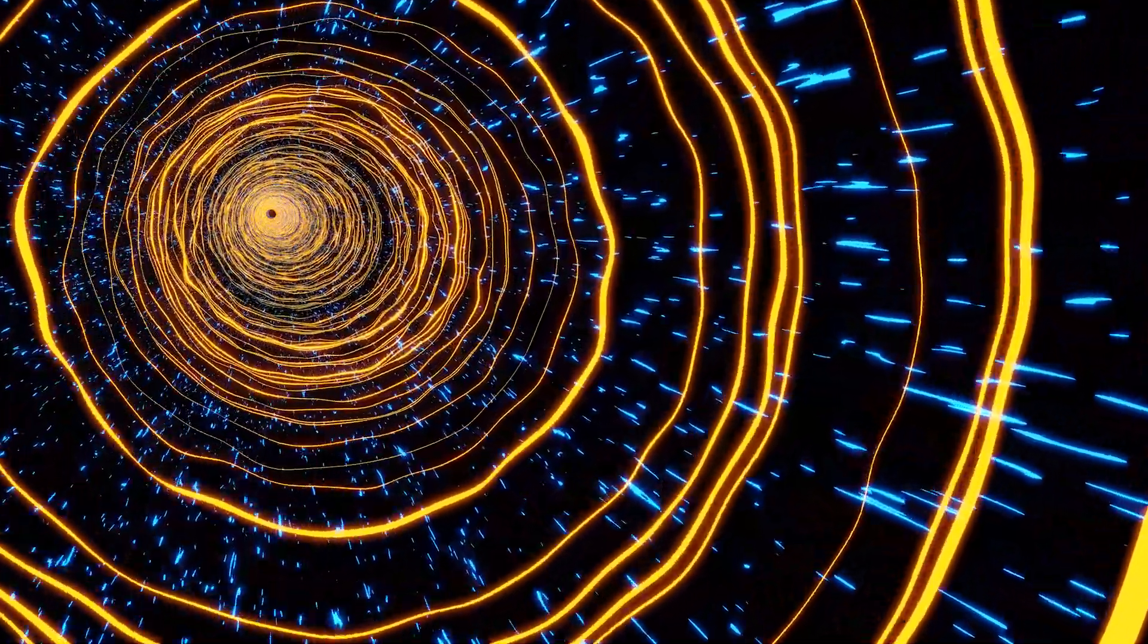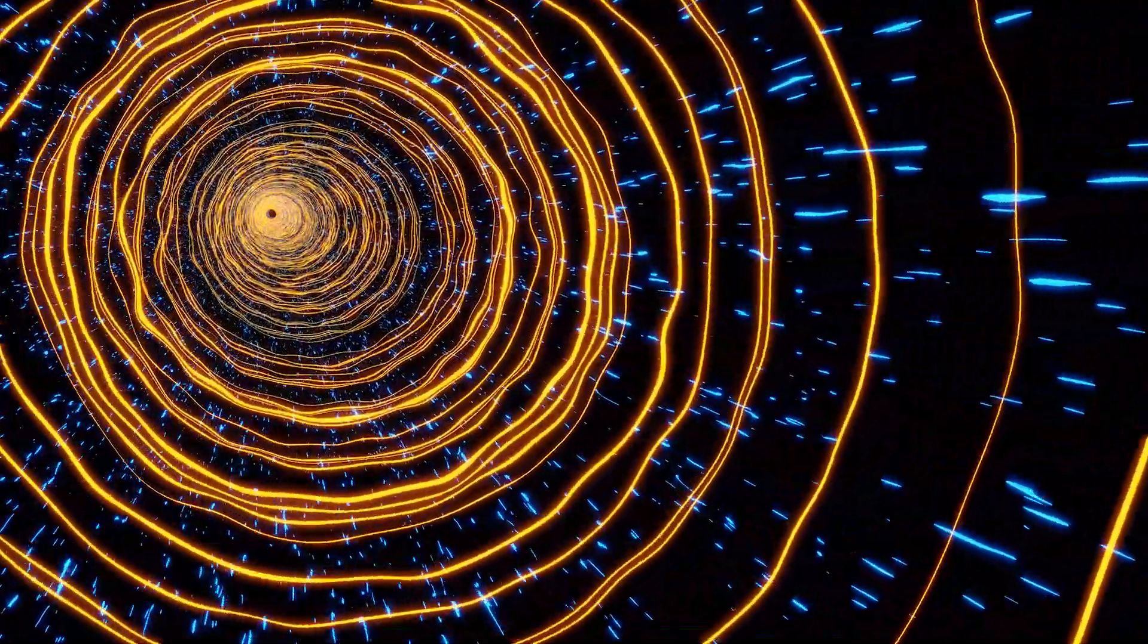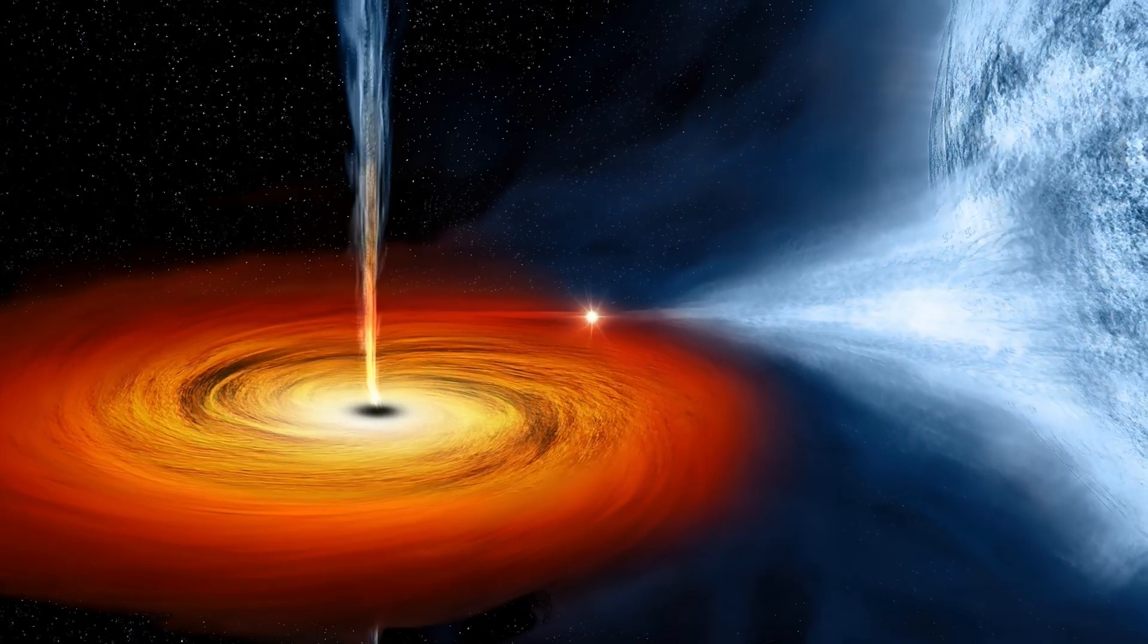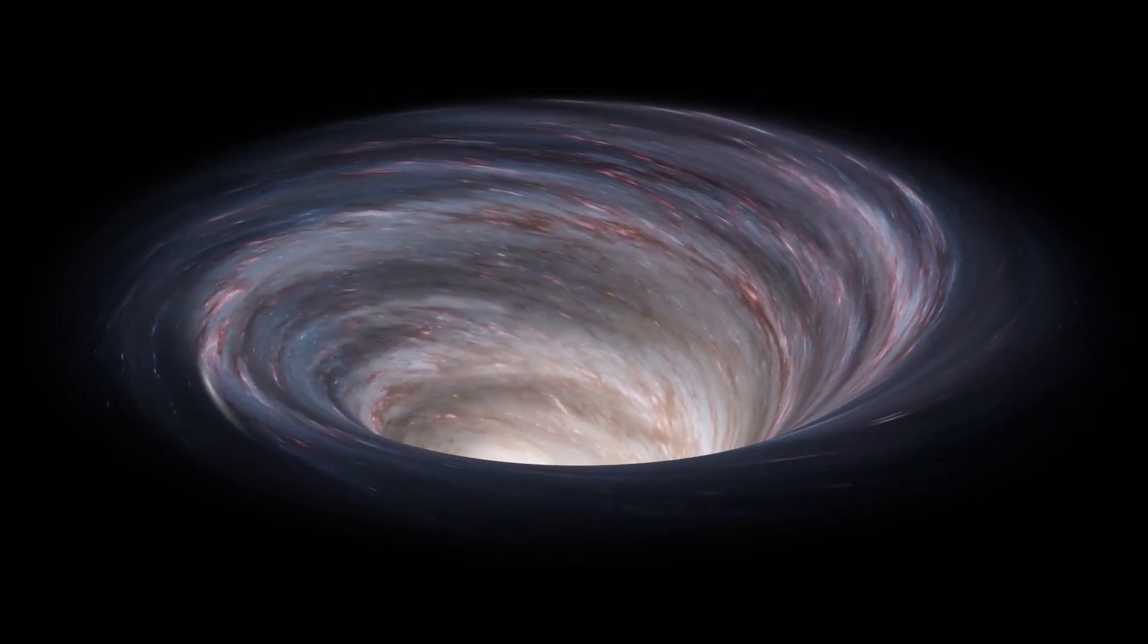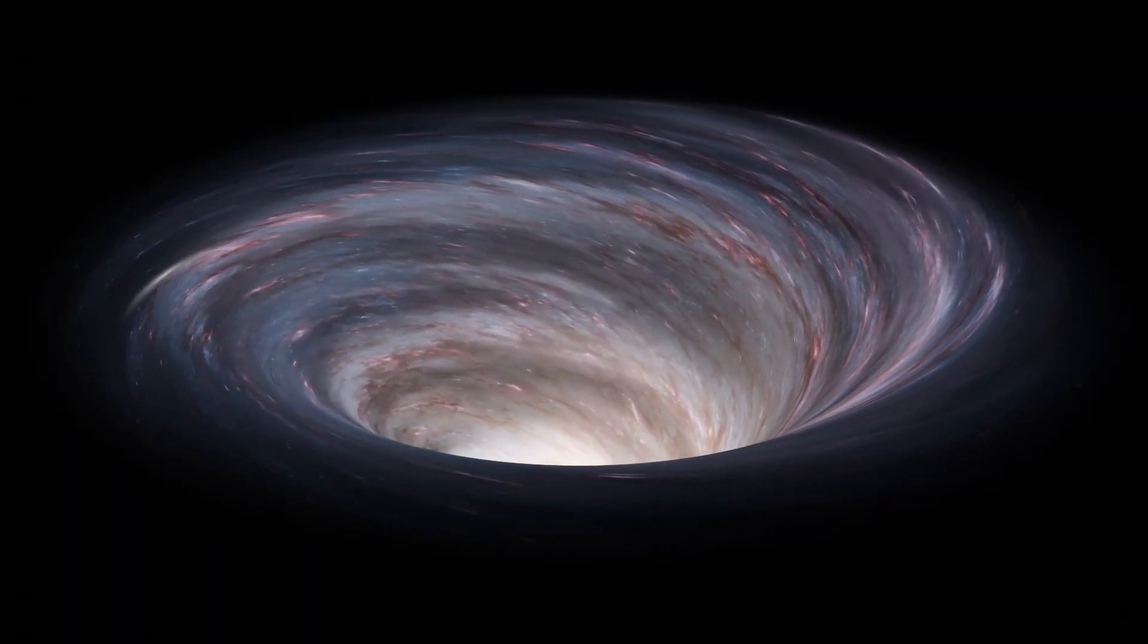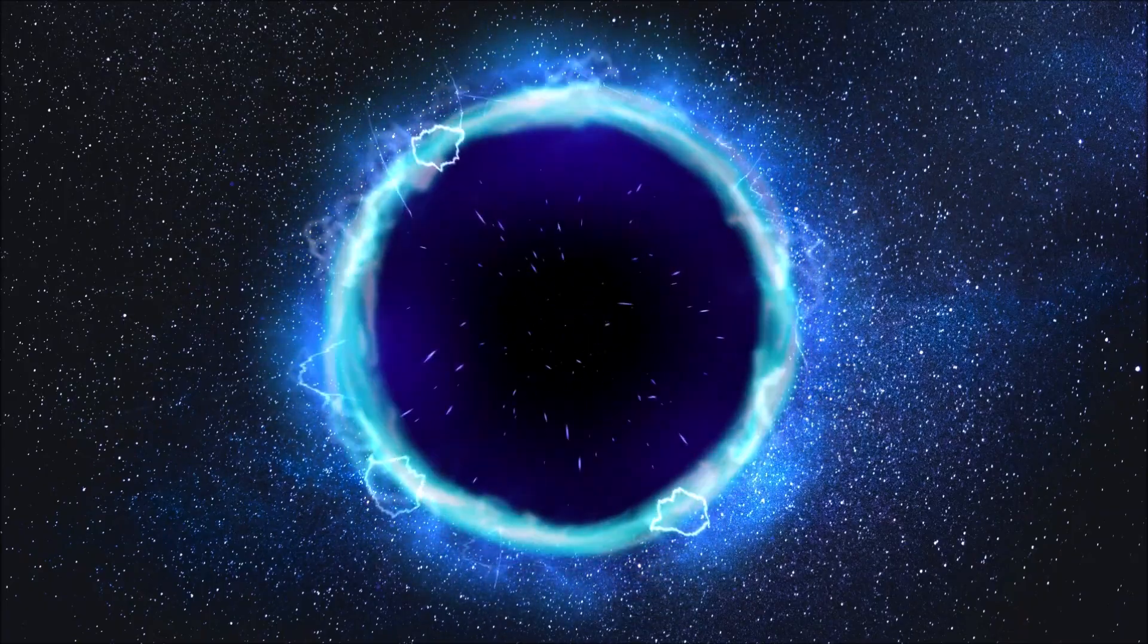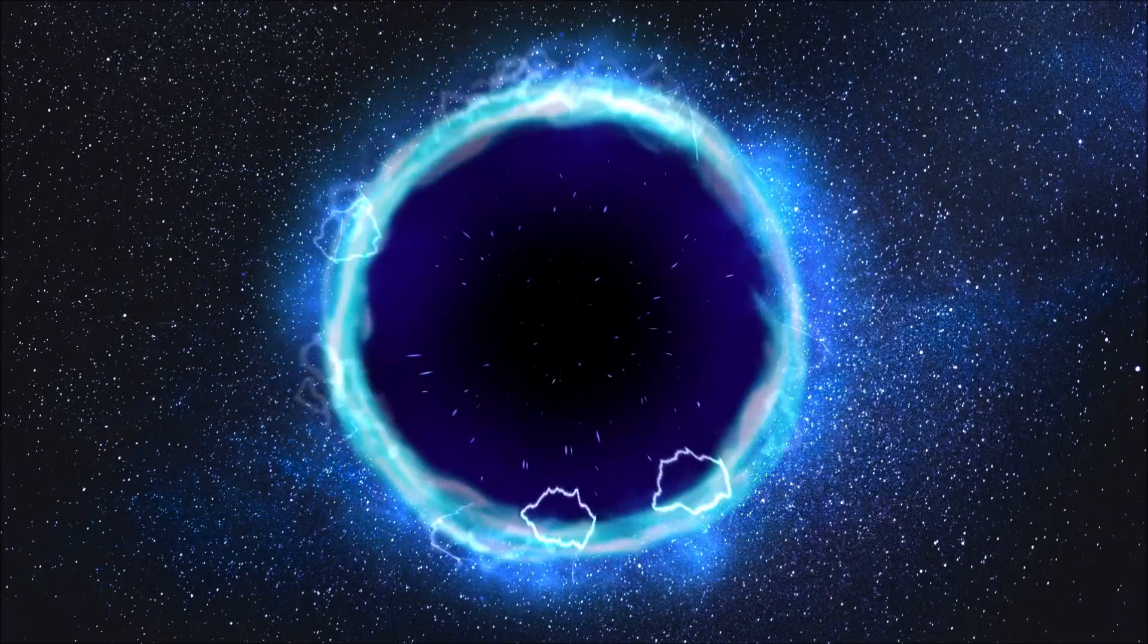And gravity, our old friend, now behaves like it has a split personality. Sometimes it pulls just as we expect. Other times, galaxies spin too fast or clump too soon. We built a whole dark matter story to explain this. But what if we were just patching holes in a broken model?